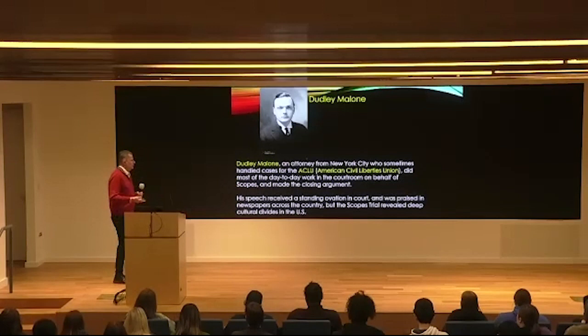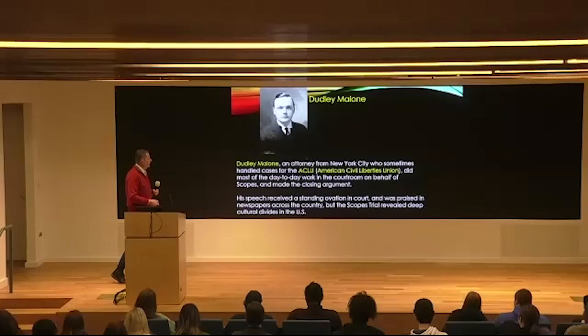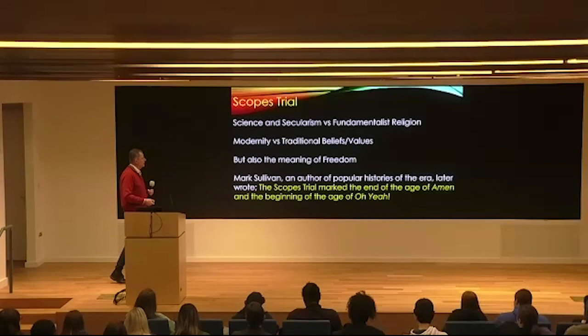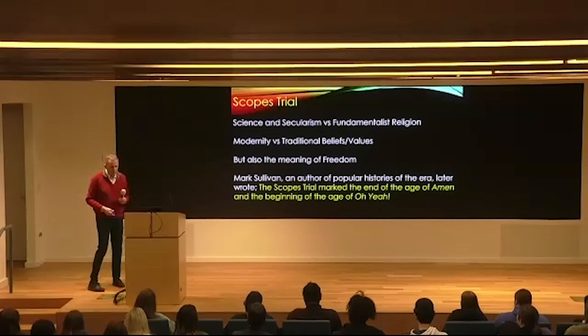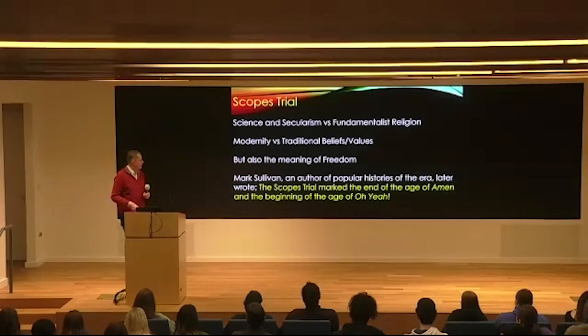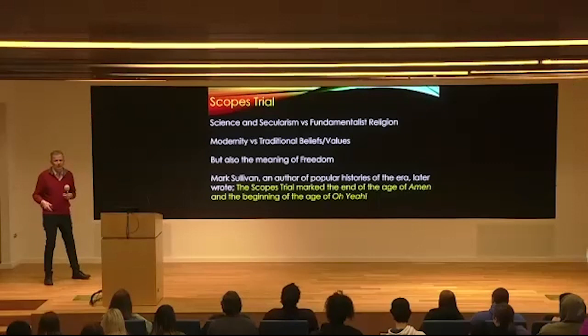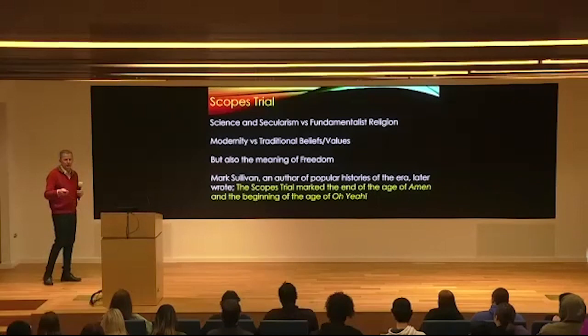John Scopes ended up being convicted for breaking the law in Tennessee and was fined. The trial deeply divided the American public. Historians have described this as a clash between science and secularism versus fundamentalist religion, and as modernity clashing with traditional beliefs and values — reflected in both the trial itself and the fact that it became a national sensation.